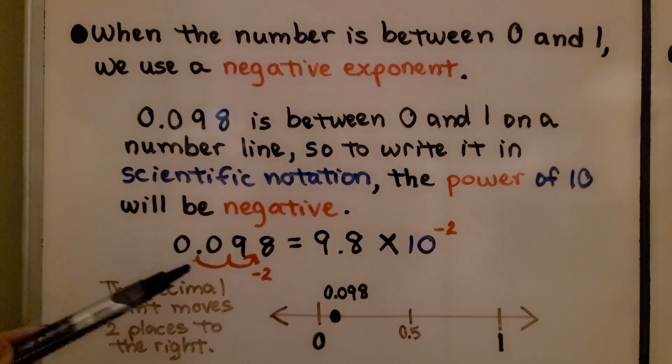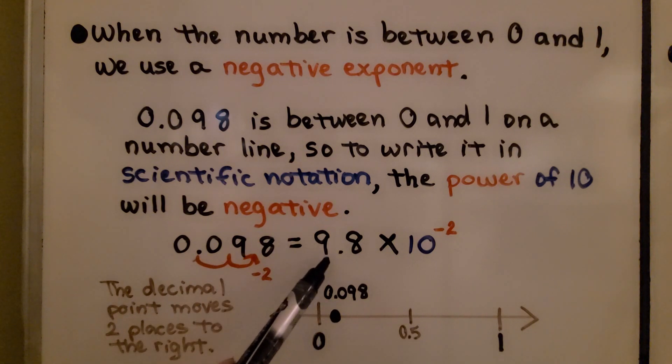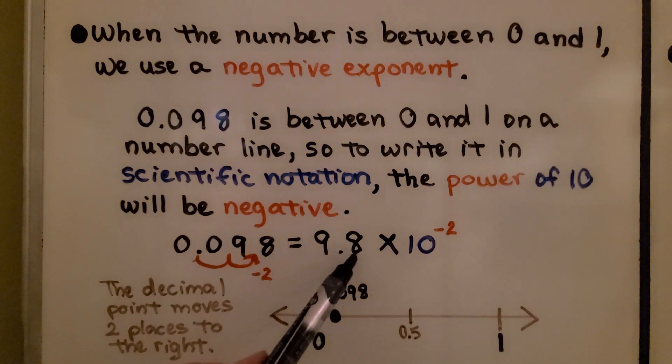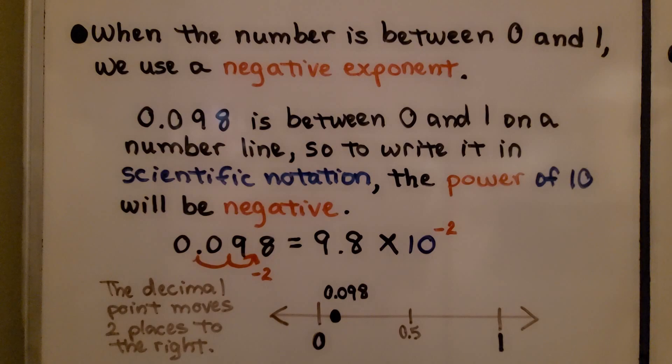The decimal point moves two places to the right. We get 9.8 times 10 to the negative second power.